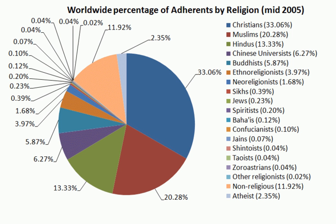The documented history of Indian religions begins with the historical Vedic religion, the religious practices of the early Indo-Aryans, which were collected and later redacted into the Samhitas, four canonical collections of hymns or mantras composed in archaic Sanskrit. These texts are the central Shruti texts of Hinduism. The Vedic period lasted from roughly 1750 to 500 BCE and is most significant for the composition of the four Vedas, Brahmanas, and the older Upanishads, presented as discussions on the rituals, mantras and concepts found in the four Vedas.